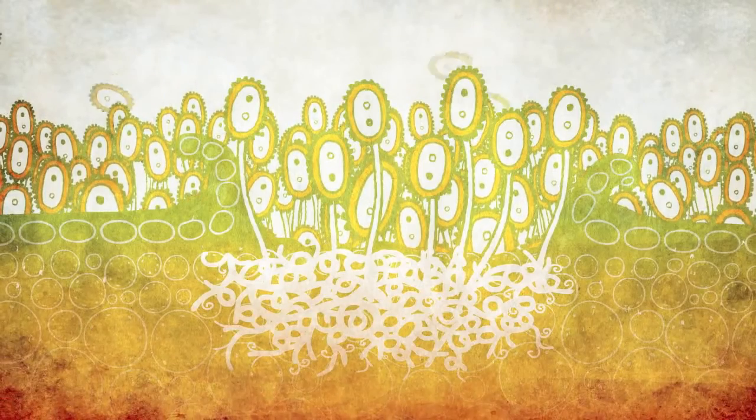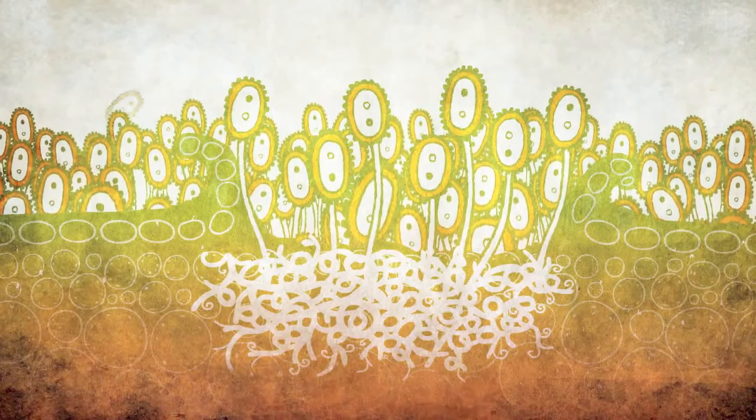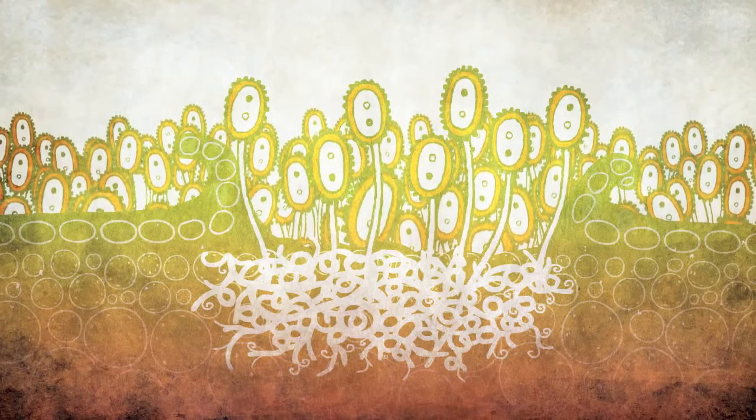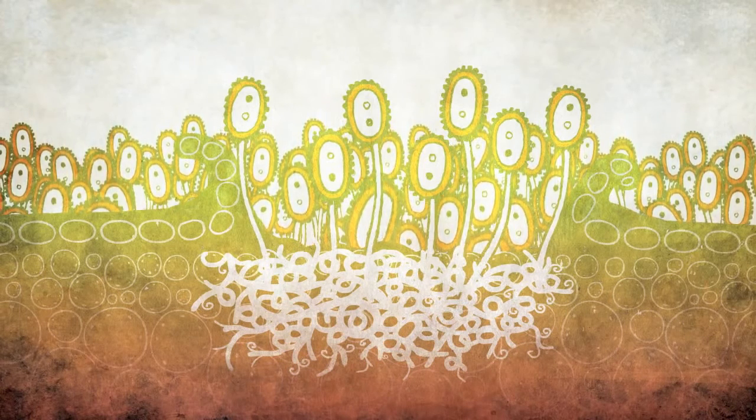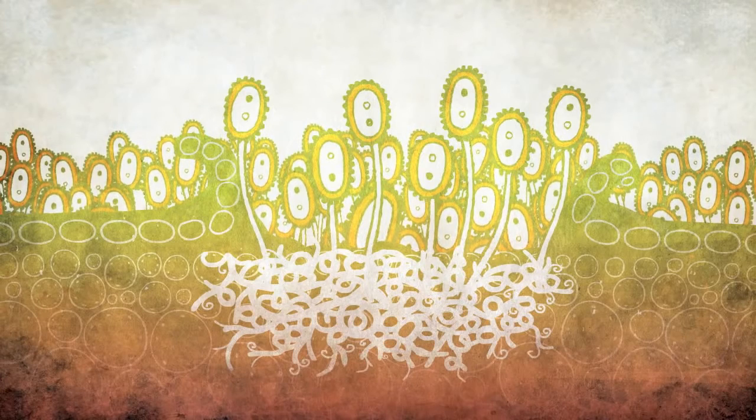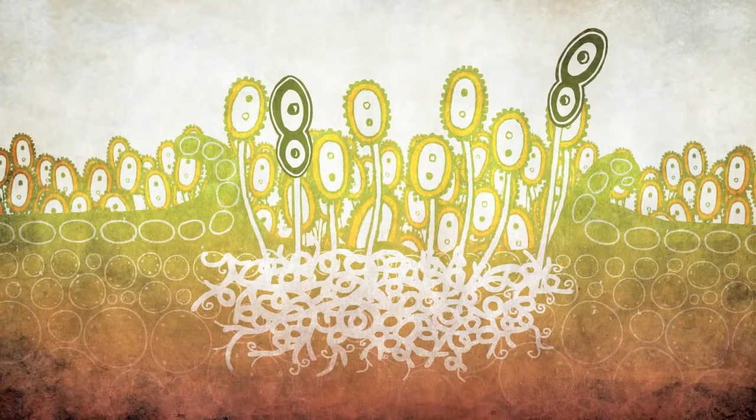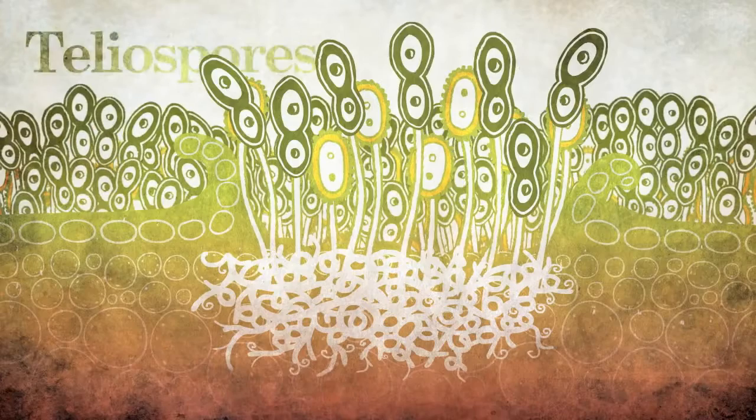As the growing season comes to an end and wheat plants begin to set seed, senesce, and die, the stem rust pathogen does something remarkable. Instead of producing more uridinia spores, it begins to produce black overwintering spores called telia spores.